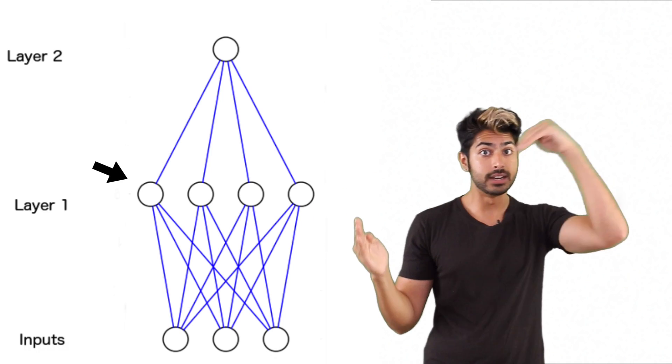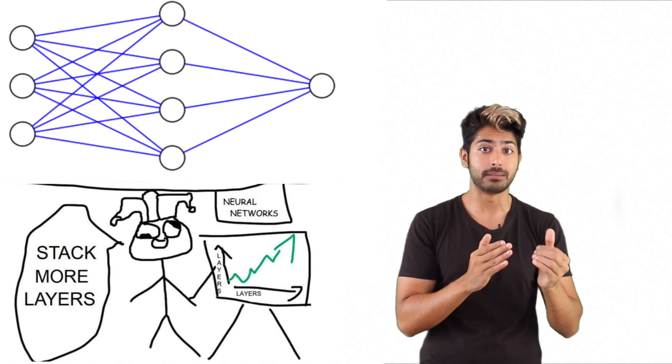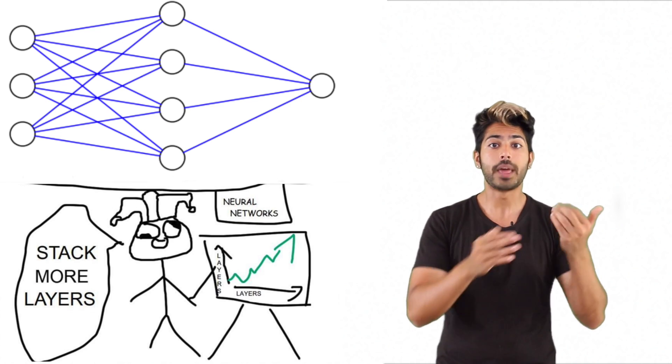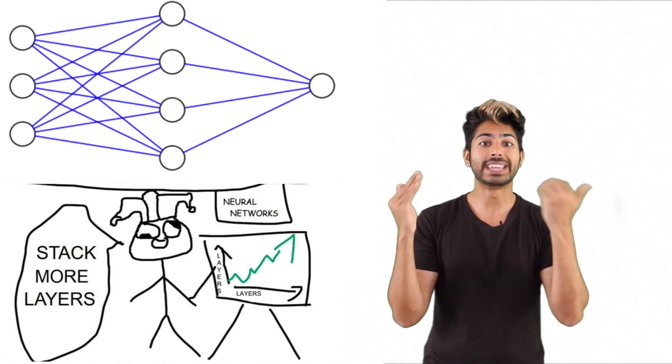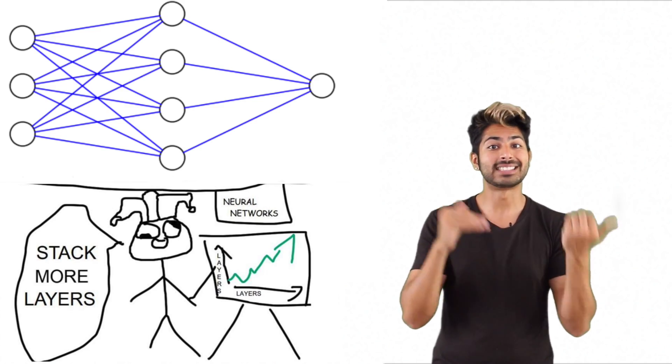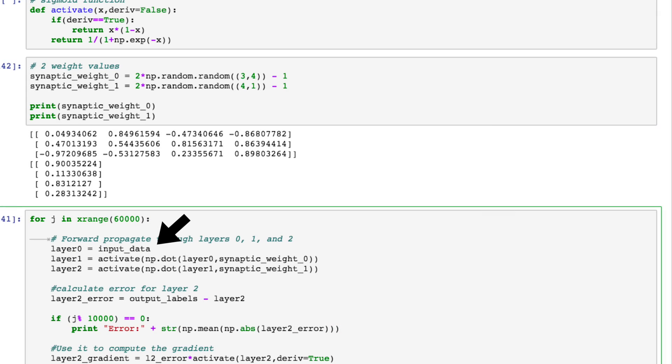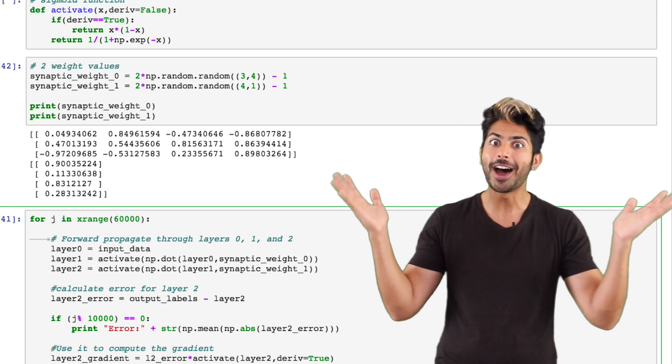Our first layer will combine the inputs, and our second layer will then map them to the output using the output of the first layer as its input. So we'll multiply the input by the first weight matrix, activate it with our sigmoid, and pass the result to the next layer as its input. It just does the exact same process. Input times weight, activate. It rhymes!